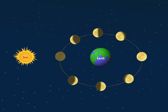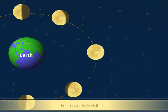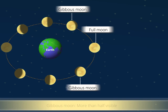When the whole bright side of the moon is visible and the moon is fully round, it is called a full moon. When more than half of the moon is visible, it is called the gibbous moon.